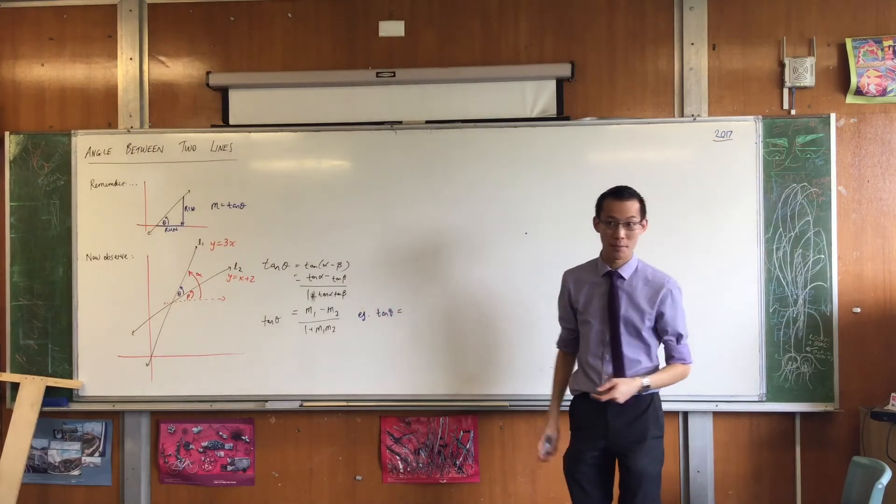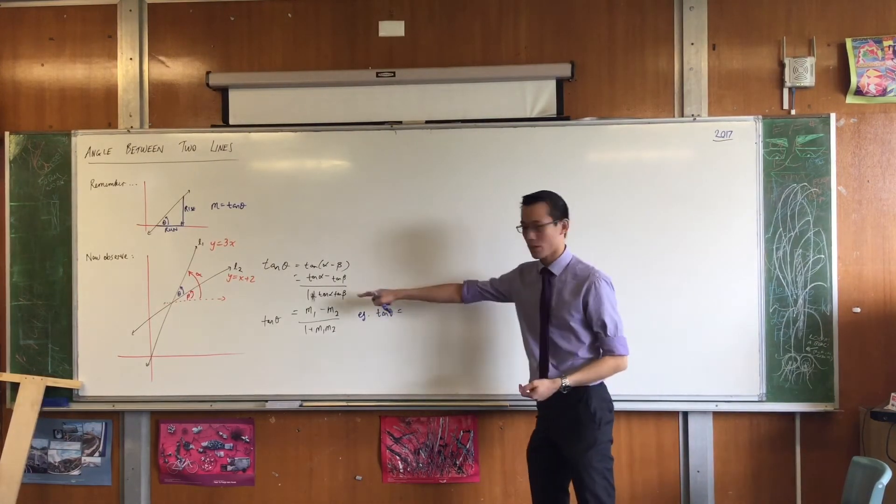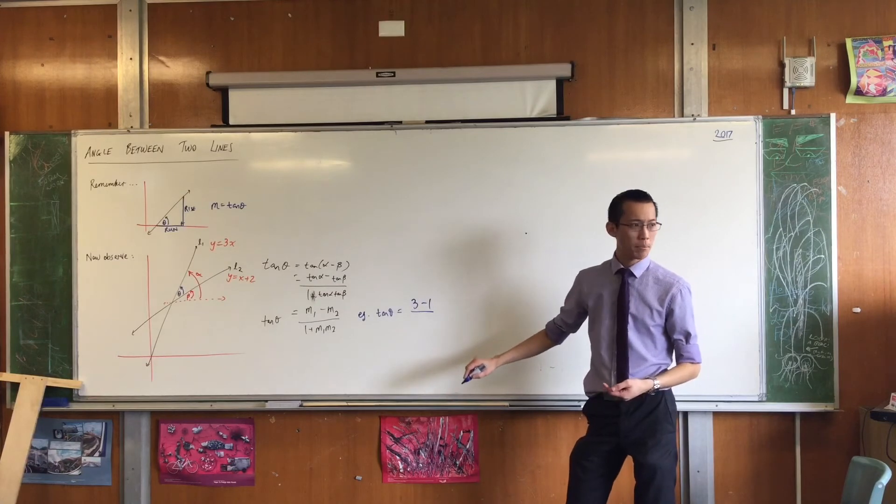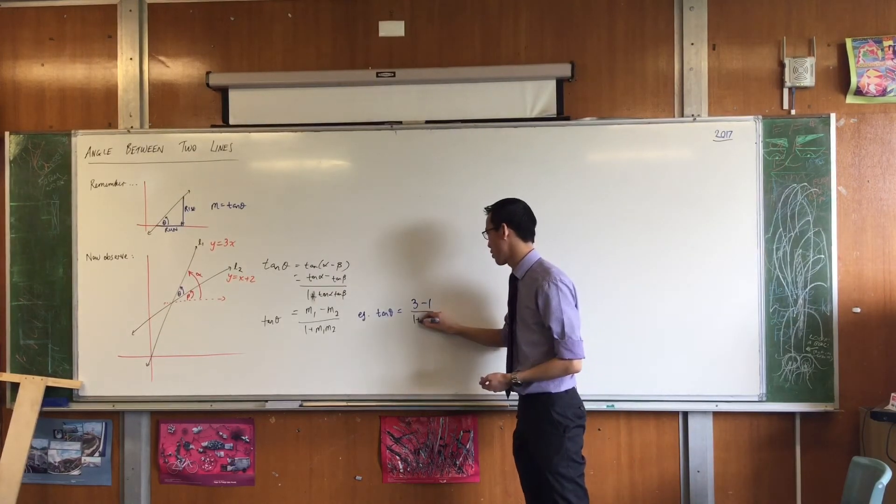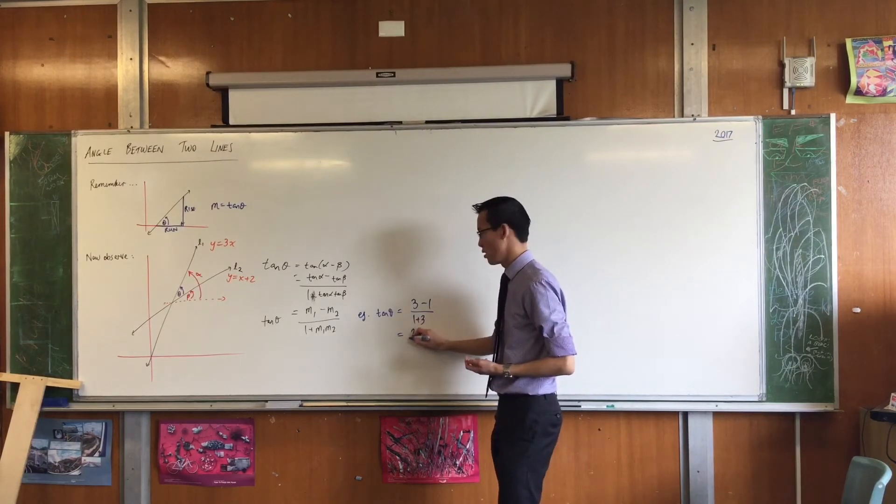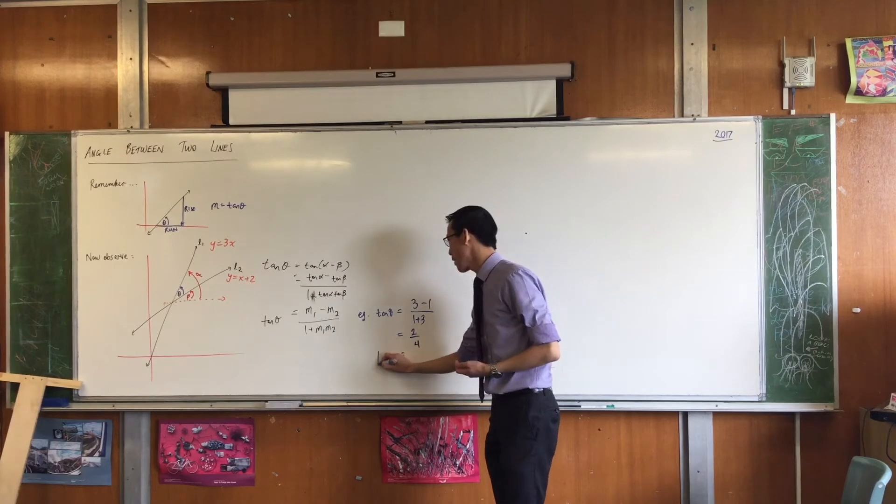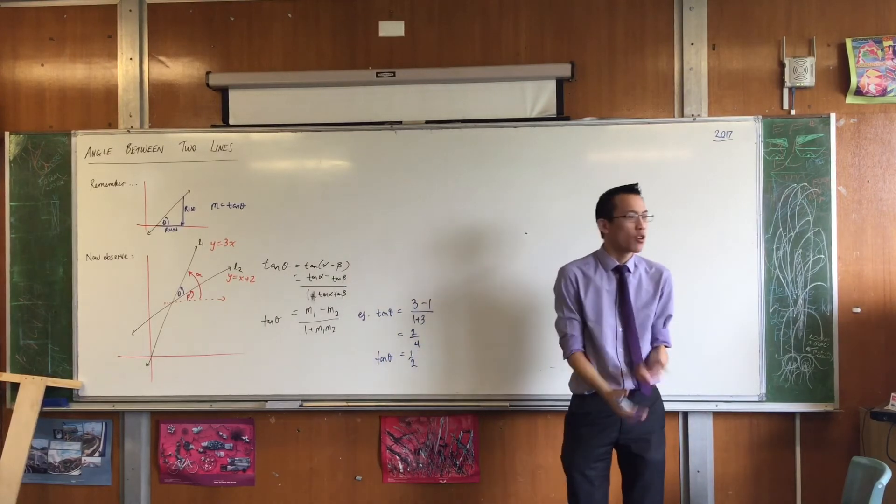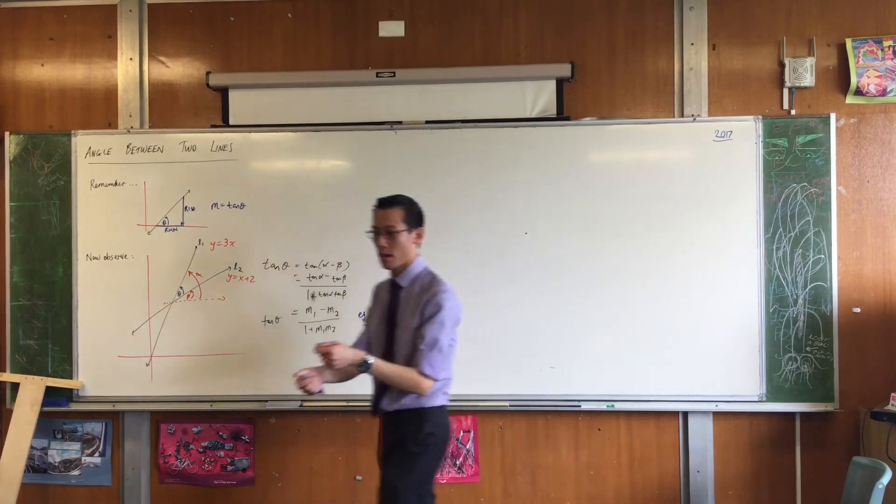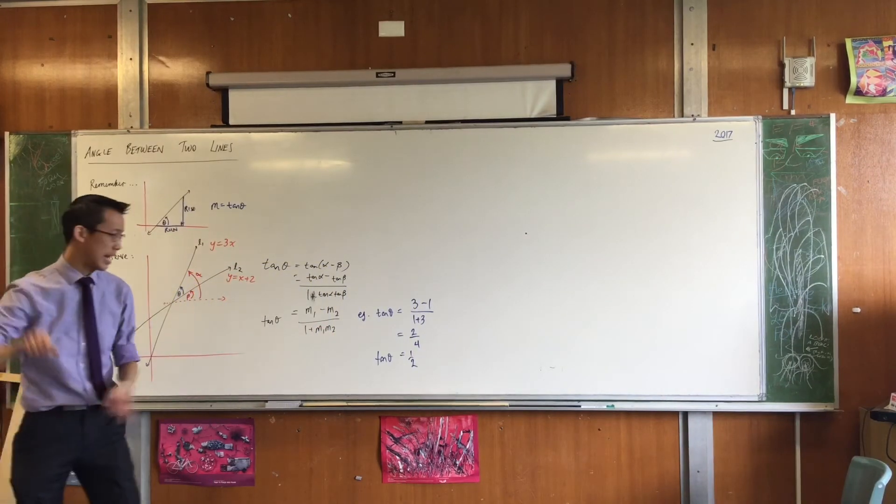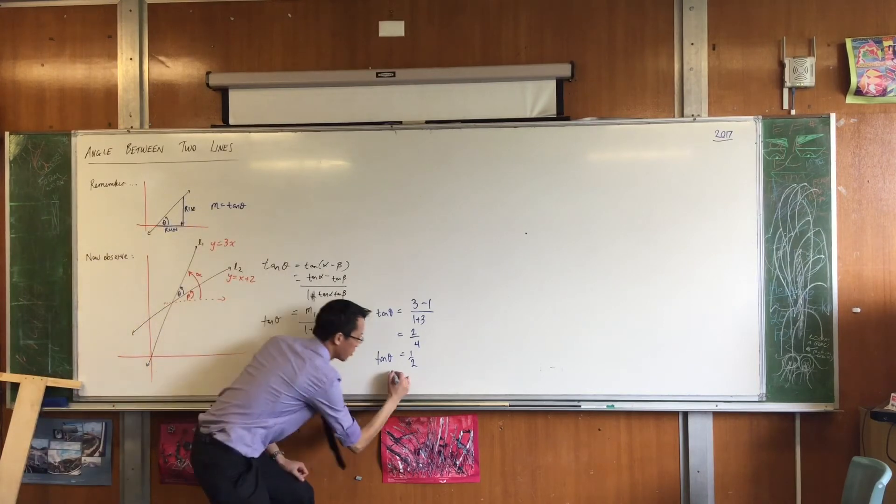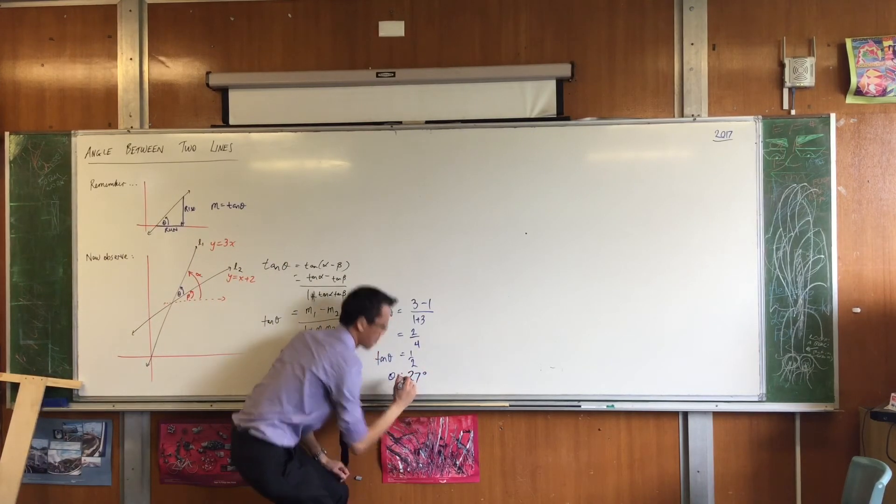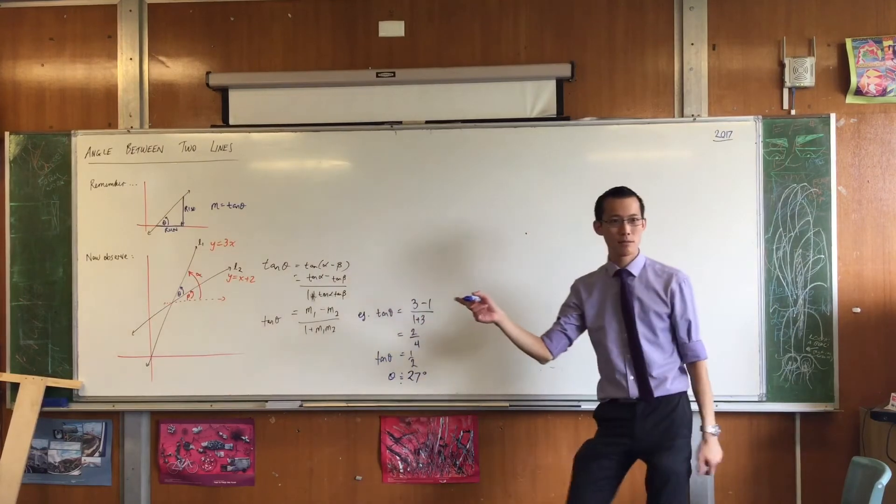If I say tan theta, you'll need your calculator for this in a second, by the way. If I say tan theta is equal to, what's on the top? This is going to be 3 take away 1, divided by what? 1 plus 3 times 1, which is 3. So that gives me that. So on the top I've got 2, on the bottom I have 4. So apparently tan theta, where theta is the angle between two lines, is a half. Now I don't want tan theta, I want theta. So can you, on your calculator, you're going to have to go shift, tan, and then you're going to supply that. Can someone give me to the nearest degree? 26. I think it rounds up to 27, doesn't it? Approximately. What do you think? Does that look like 27 degrees? It does, right? It checks out.